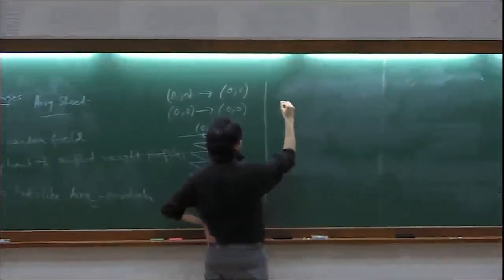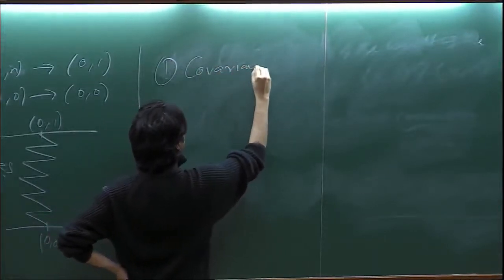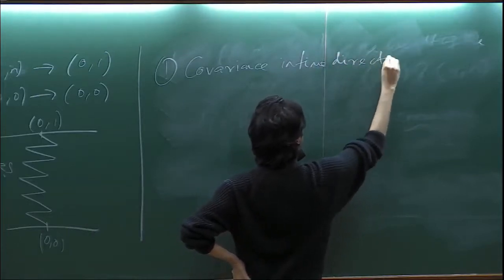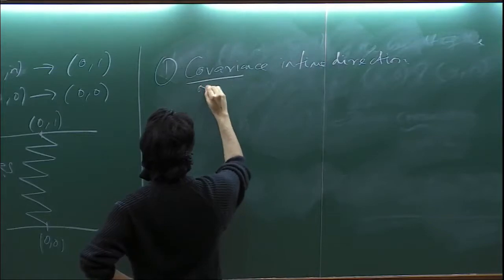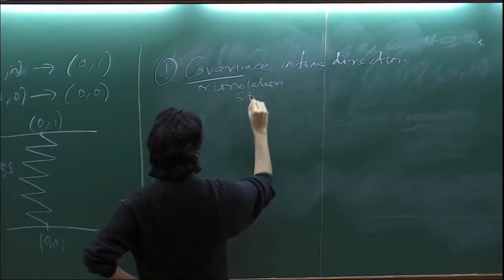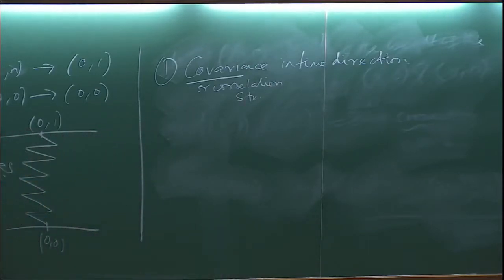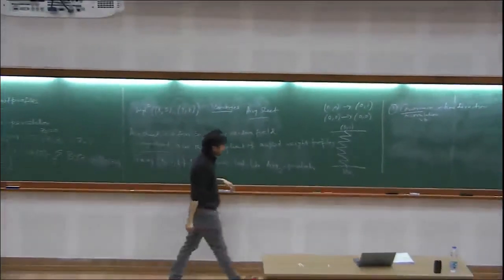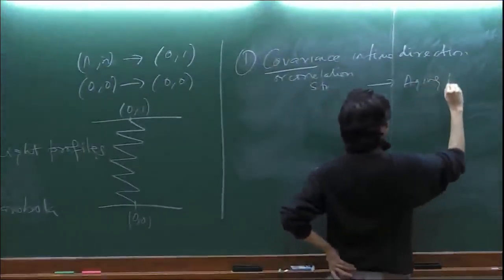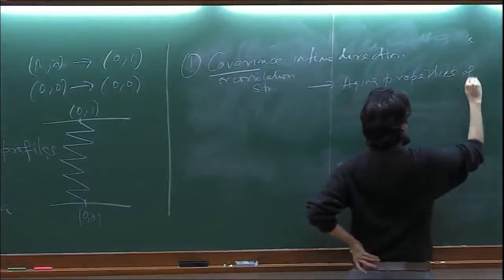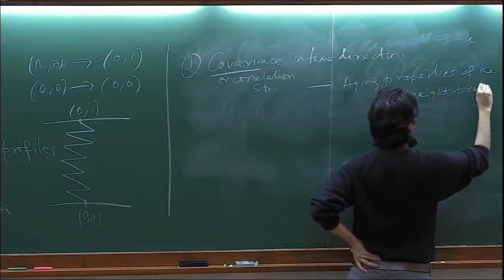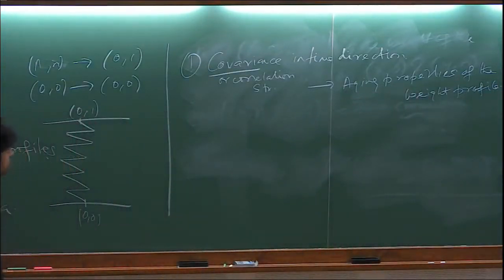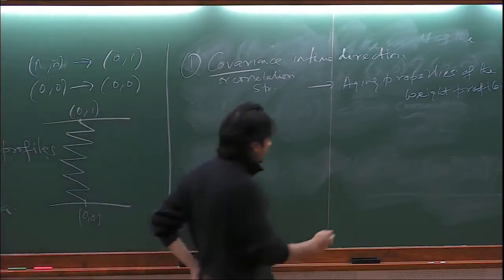There are two interesting things you can ask. One is the correlation structure in the time direction: fix X and Y both to zero, fix S, vary T, and understand how these things are correlated as T varies. This is also known as aging properties. Recently we posted a paper with Riddhi Basu studying correlation exponents for certain models of last-passage percolation. Apparently there was also another work by Patrick Ferrari and O'Kelly at the same time, who proved similar things in a slightly different setting.